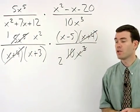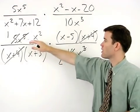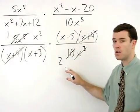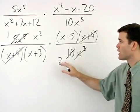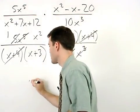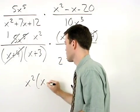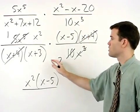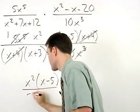To simplify from here, simply multiply across the numerator and multiply across the denominator. So we have x squared times x minus 5 over 2 times x plus 3.